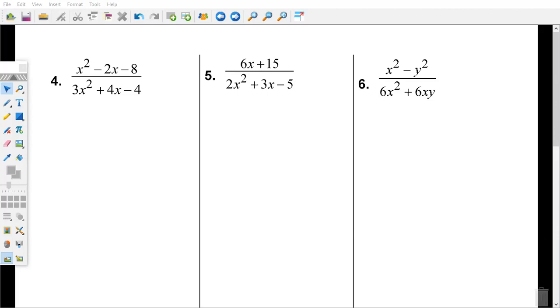We talked about in order to simplify, you want to factor your numerator and your denominator. Then you eliminate common factors, not terms, common factors. And then you state the restriction on the denominator. That's what we're doing.